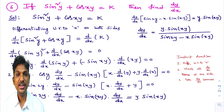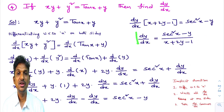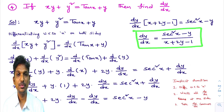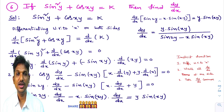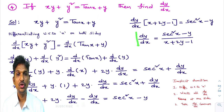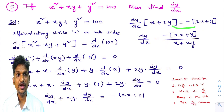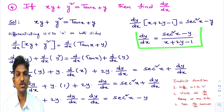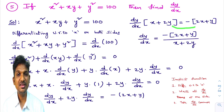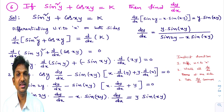Once you identify the given function is an implicit function, to find dy/dx from the implicit function, we will follow three things. Number one, we will differentiate the given implicit function with respect to x on both sides. Number two, once differentiation is over, we will write all dy/dx terms at one side and remaining all terms on the other side. Number three, we will take dy/dx common. Once we have taken dy/dx common, then we can easily write what dy/dx is. Keep these points in mind while doing implicit differentiation.